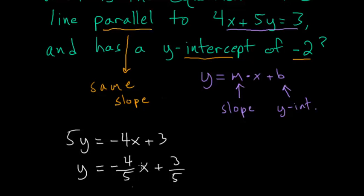And since the coefficient on x is this minus 4 fifths, we know that the slope in our line is equal to minus 4 fifths. So now writing the equation of our line, we have y equals minus 4 fifths x plus b.